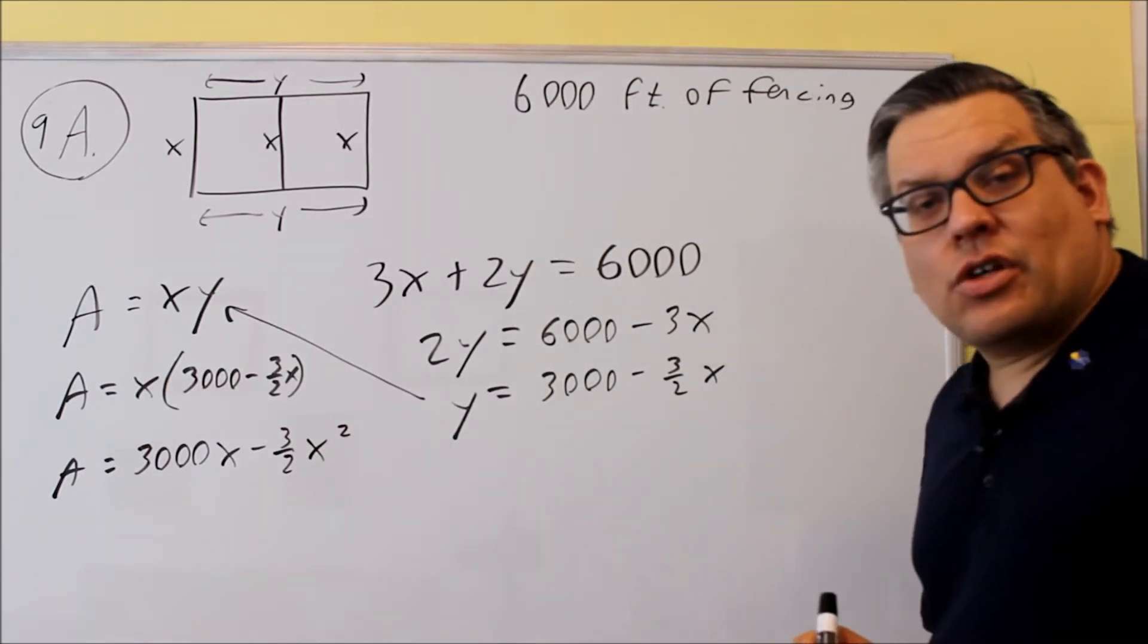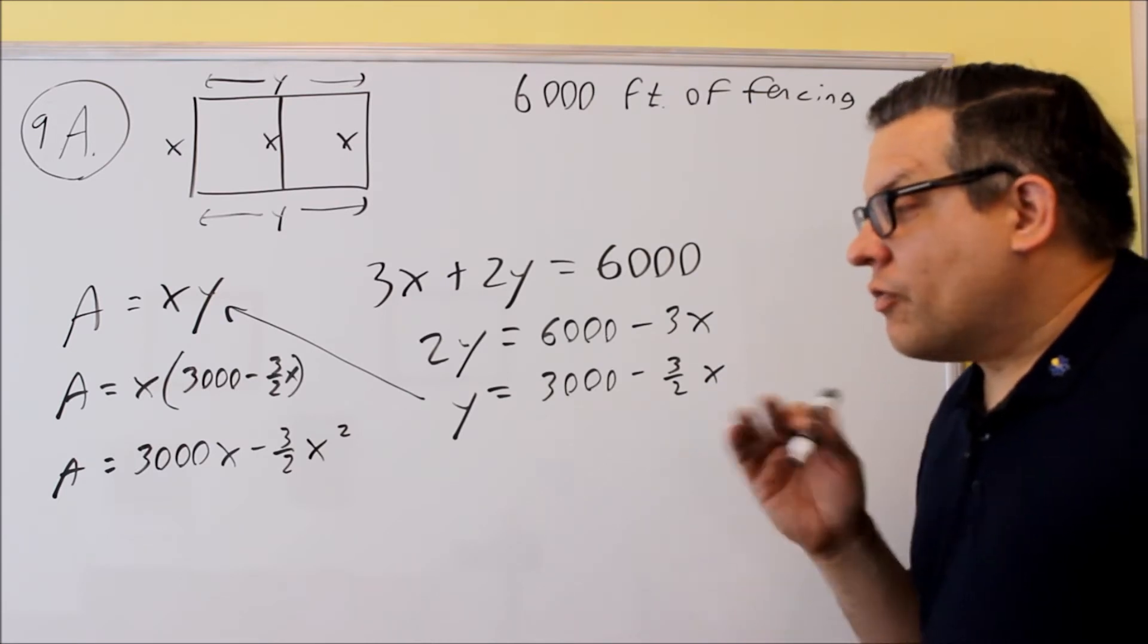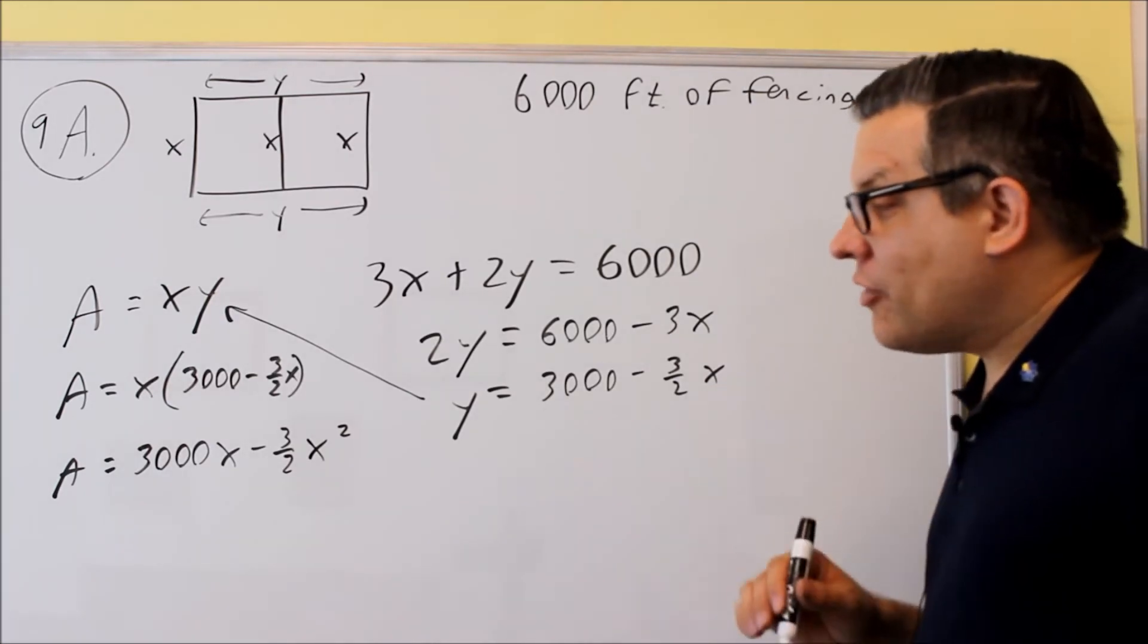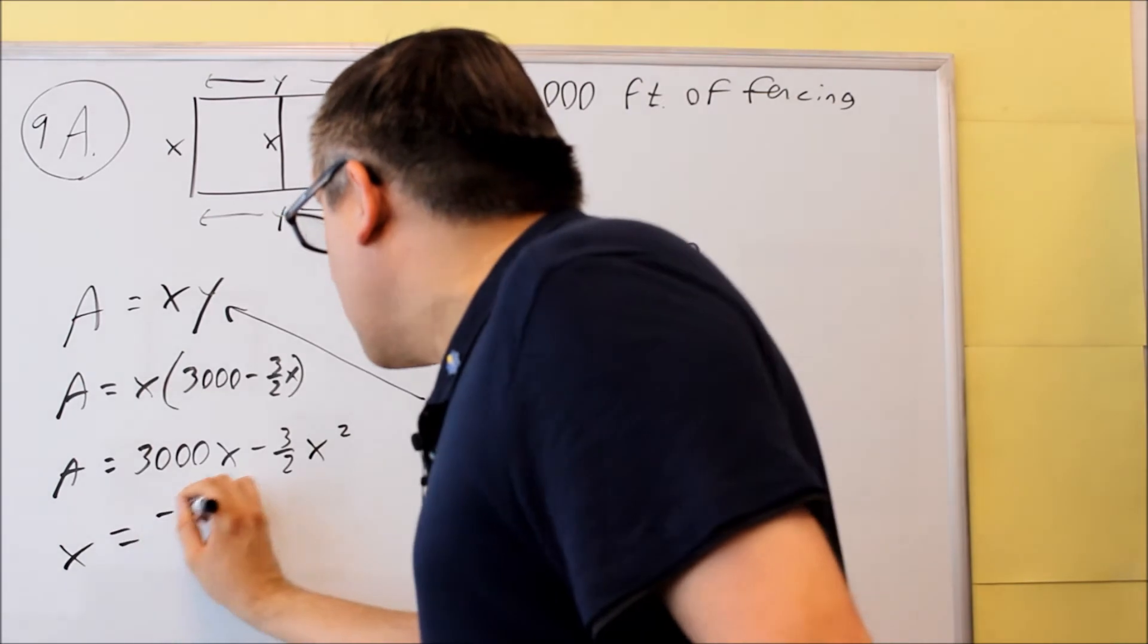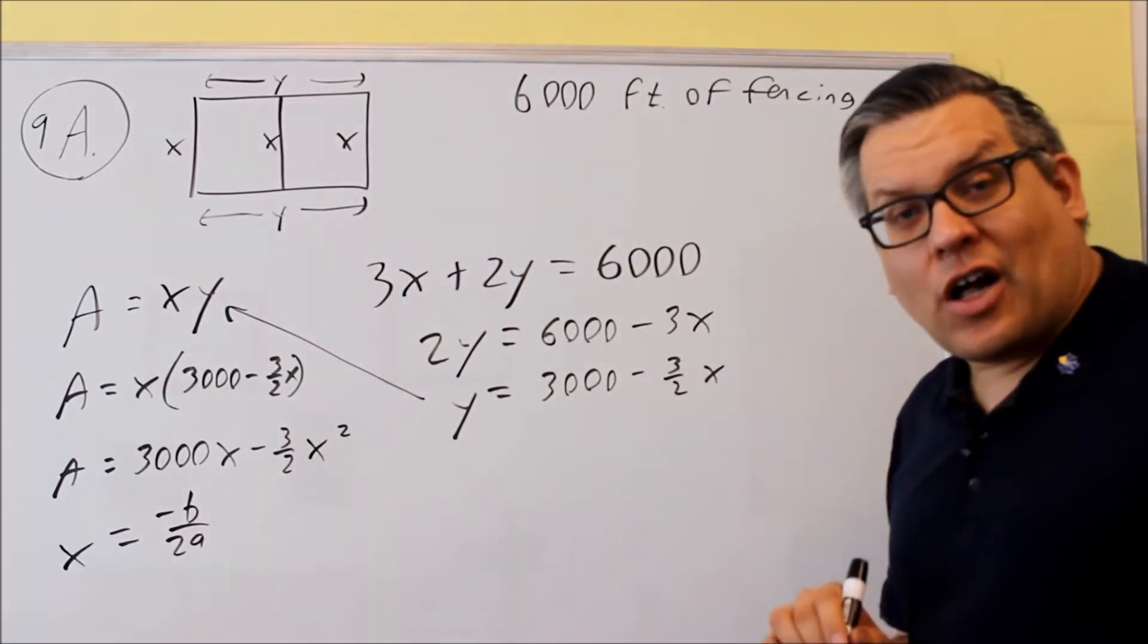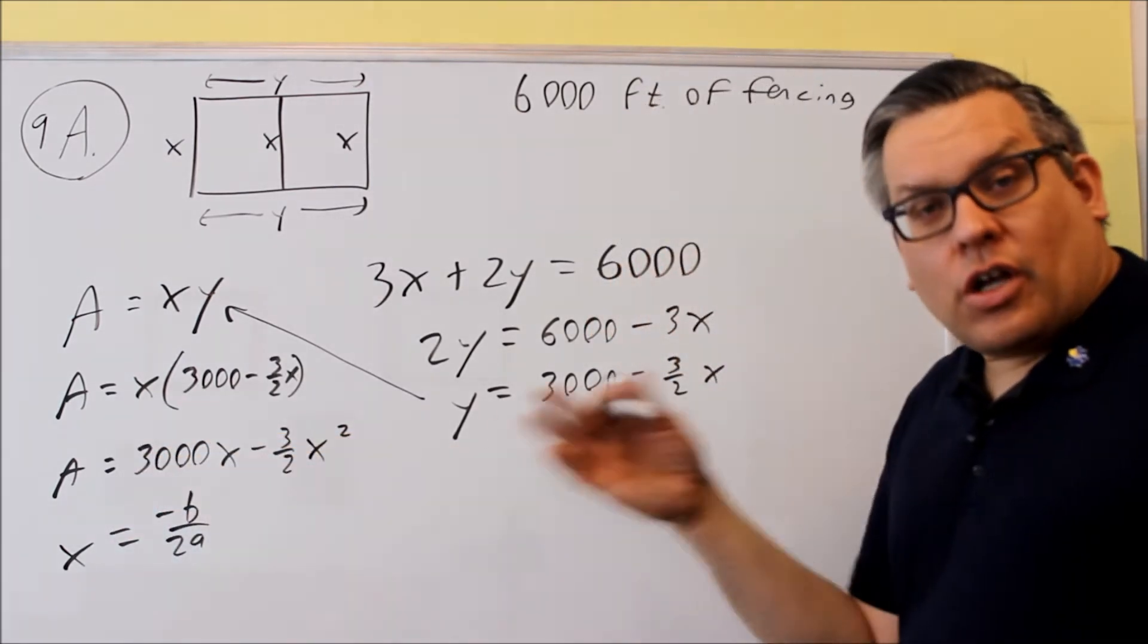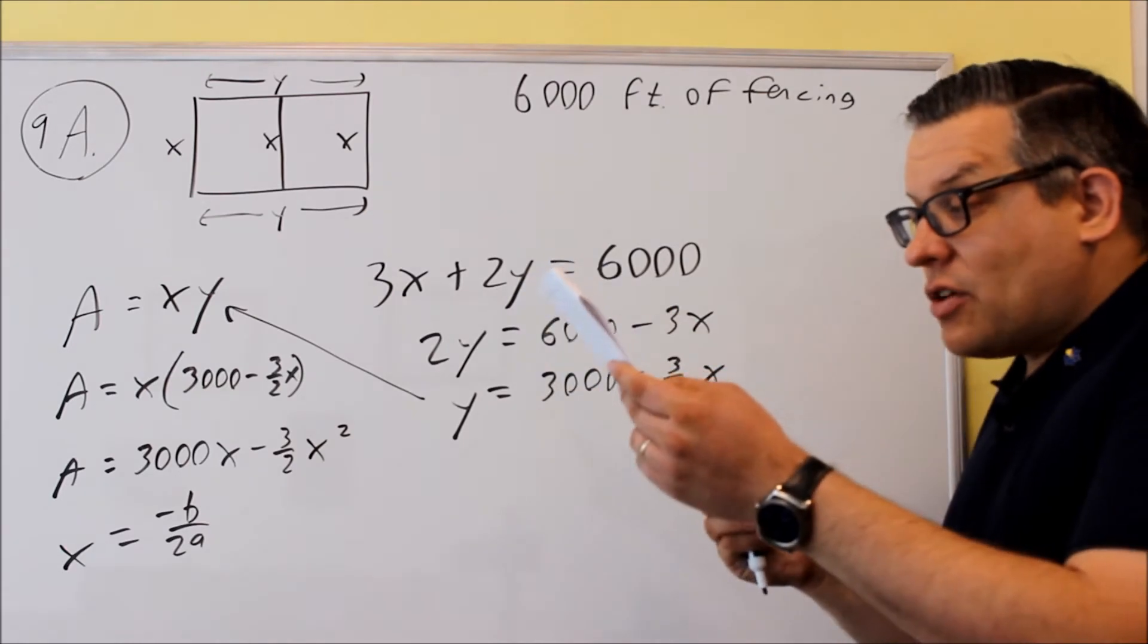This is the equation that you're now going to use with the vertex formula. So the vertex formula would be negative b over 2a. We're going to use this formula: x equals negative b over 2a will give you the x value of your vertex. And then when you plug this into the A value there, you'll get the area itself.